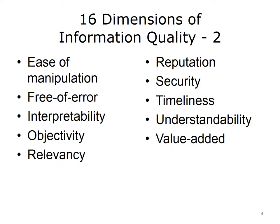This slide continues the list of the 16 dimensions of information quality. Ease of manipulation: the extent to which data is easy to manipulate and apply to different tasks. One aspect of ease of manipulation considers the ability to accurately and consistently connect one data set with another related data set for analysis. Free of error: the extent to which data is correct and reliable. Analysis of this dimension would examine accuracy issues at various stages of the information processing life cycle.